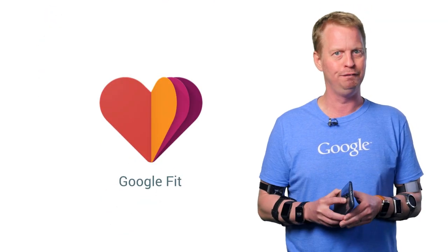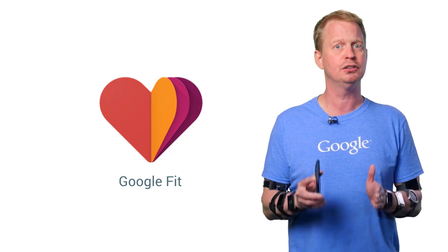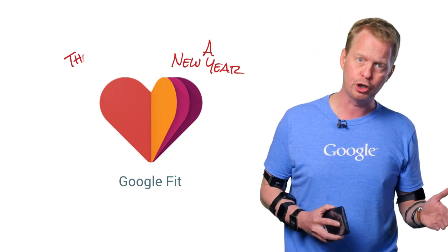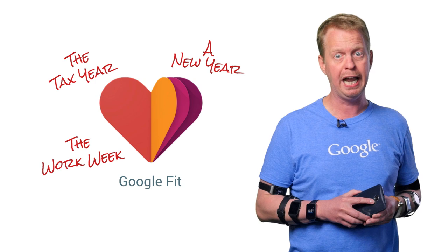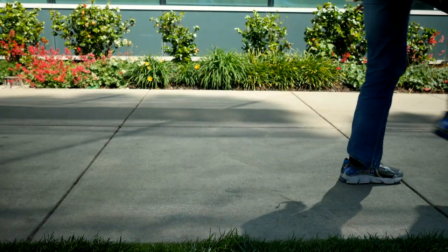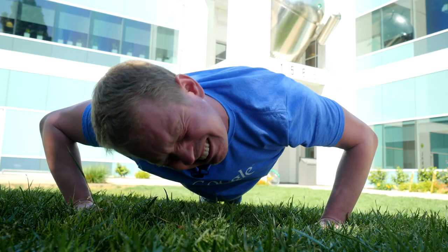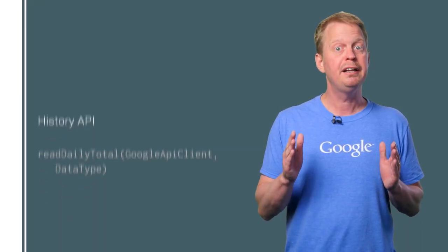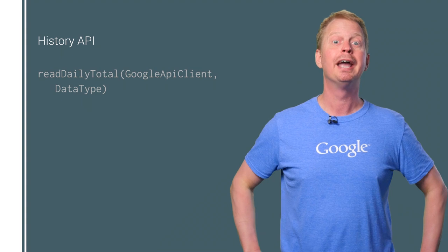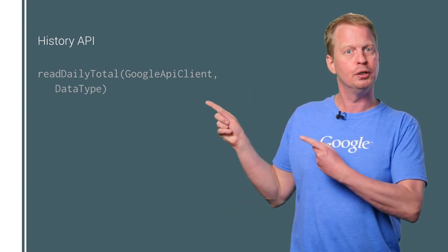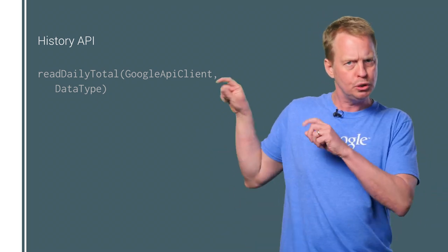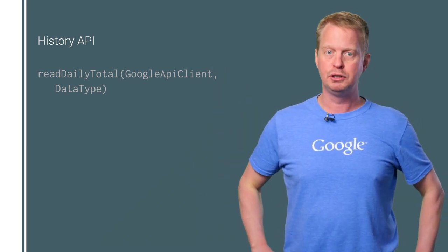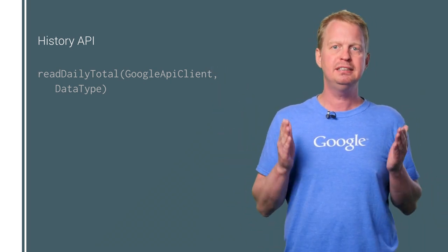Over to the many new things in Google Fit. Many things in life are not based on a daily cycle — for example, the work week, the tax year, or a new year. Fitness, however, is all about today: how many steps have you taken today, how many calories have you put in your body today, how many push-ups have you done today? So to make these today-things easier, the History API now provides the method readDailyTotal, which aggregates data for a given data type from midnight to the current time of day. You just put in the data type and it returns the daily total — for example, how many steps have I taken today?